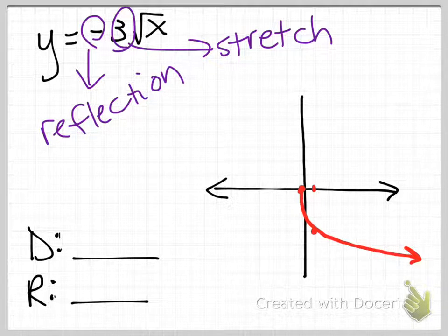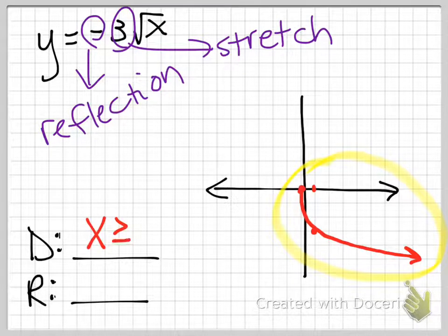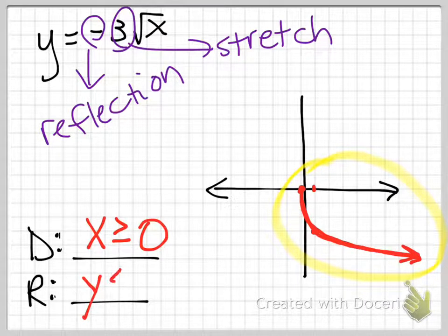So now how does this affect my domain and range? Well, the domain still goes to the right only and it starts at 0, so the domain is still x is greater than or equal to 0. But since we reflected this, now the y values are going down, so y is less than or equal to 0.